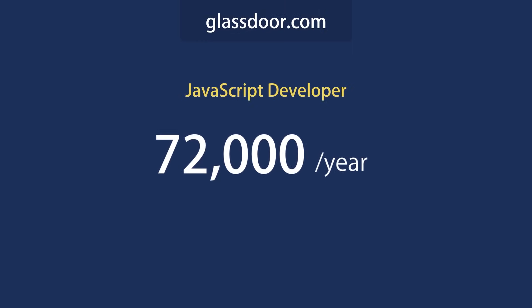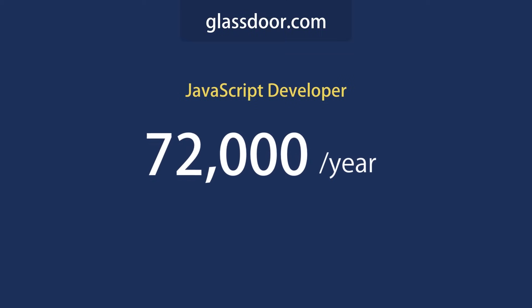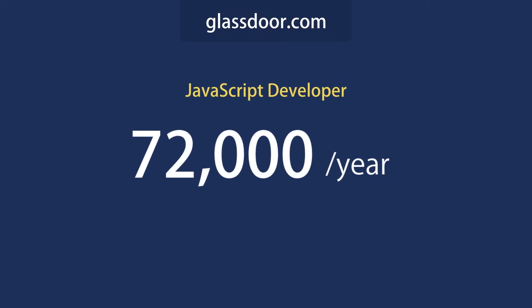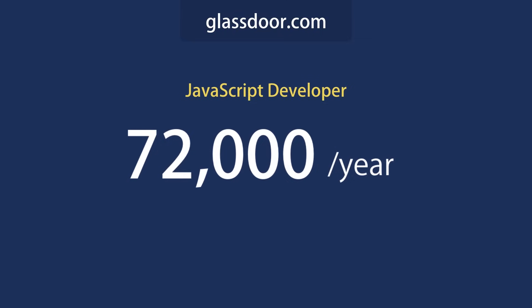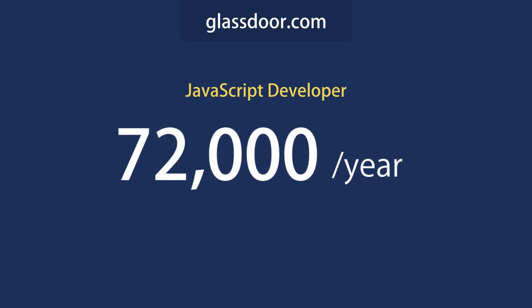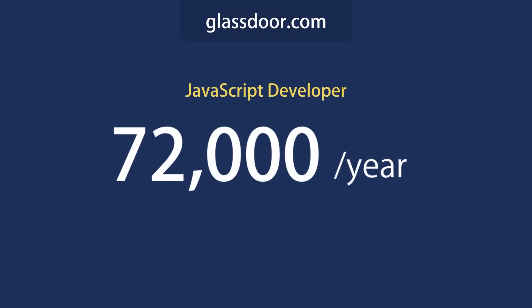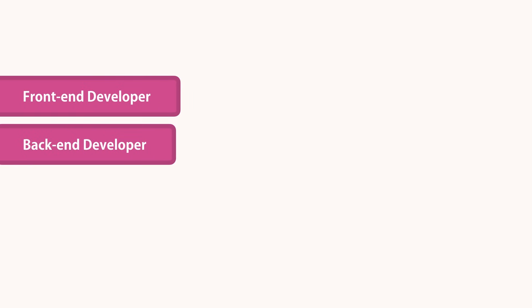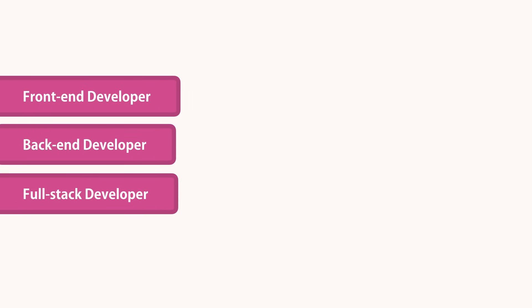The average salary of a JavaScript developer in the United States is $72,000 a year. So it's a great opportunity to get a good job out of learning JavaScript. You can work as a front-end developer, a back-end developer, or a full-stack developer who knows both the front-end and the back-end.